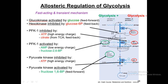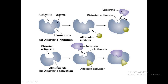Looking at the enzyme structure again: this is the active site and this is the allosteric site. When an inhibitor binds to the allosteric site, it induces a conformational change in the enzyme — the active site becomes more narrow. As a result, the substrate cannot bind because the orientation, configuration, and space required for substrate binding are no longer available, so no reaction takes place and no product forms.